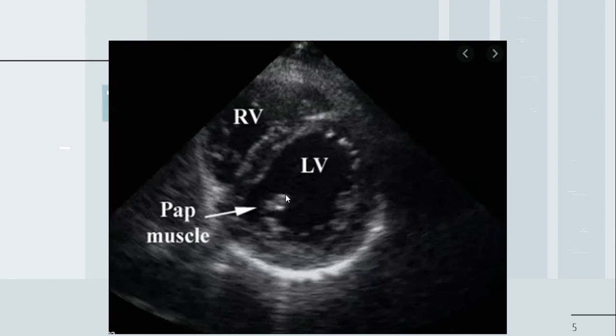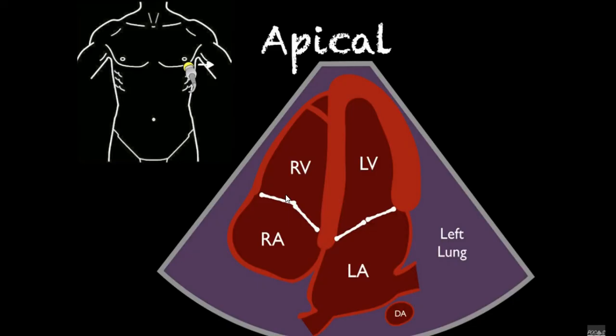Next we have the apical view of the heart. Again, the probe has changed its position on the body, and you can see a different view showing the right ventricle, left ventricle, right atrium, and left atrium. This is an actual ultrasound image of the apical view.